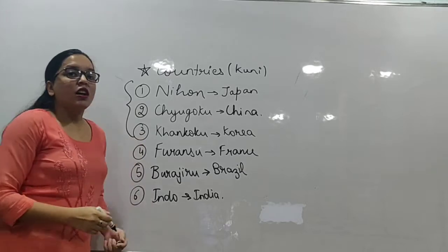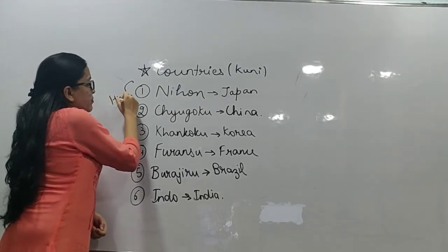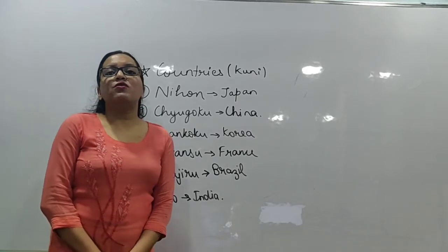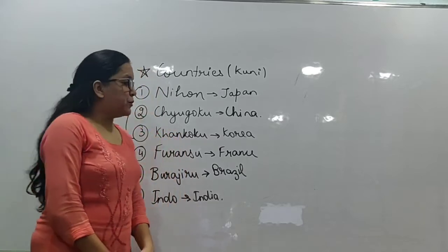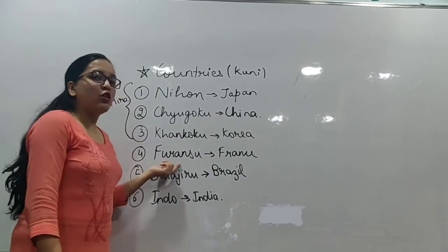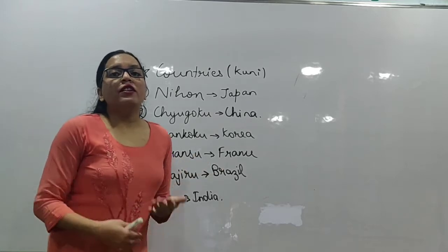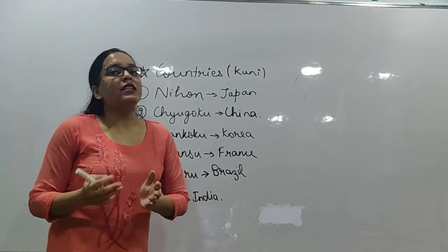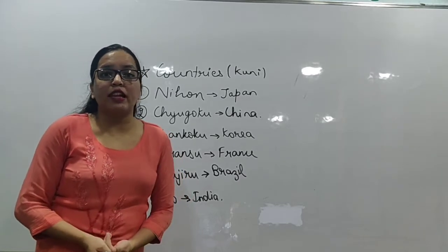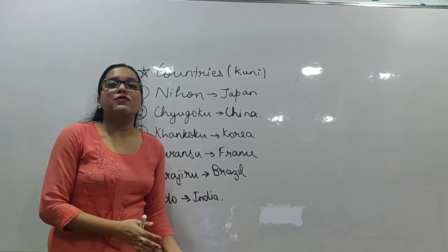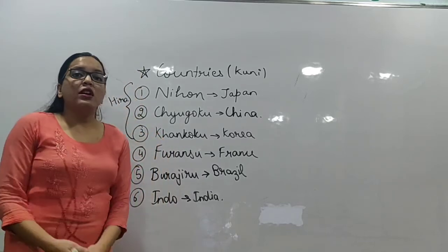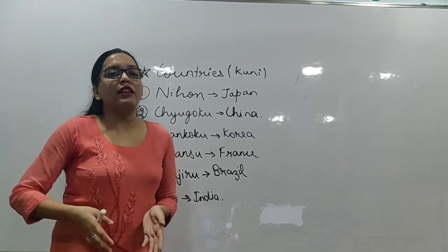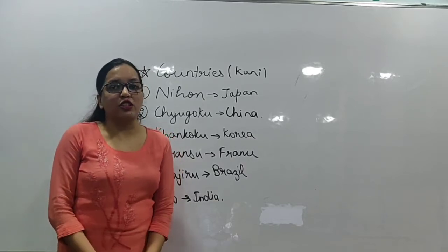All three of those countries — Japan, China, and Korea — are in Hiragana. The other countries are written in Katakana. For example, 'Furansu' — even as we say it, we can guess it might be France. This is because Katakana words are directly translated from English. 90% of the time, we can guess Katakana words even without being told the meaning, but for Hiragana words, we need the teacher to explain.